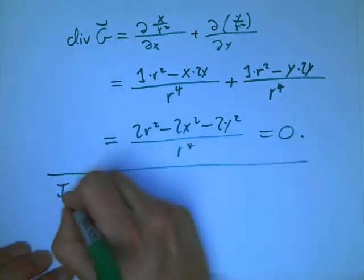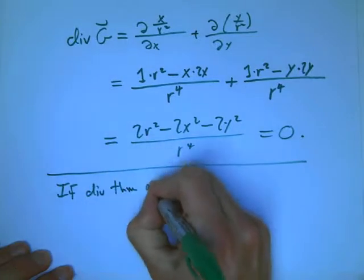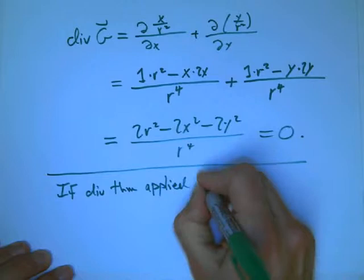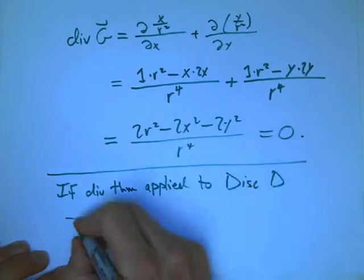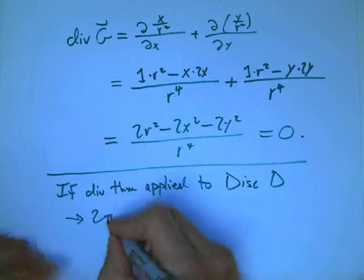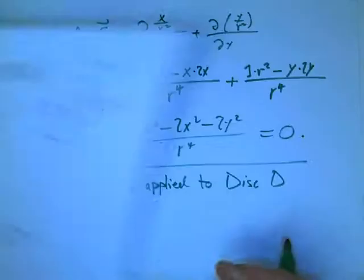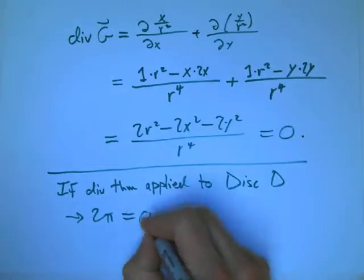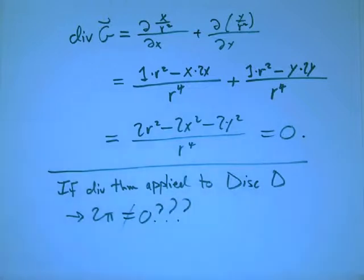That's a very pretty result, but immediately, it's a very disturbing one. Because if the divergence theorem applied to our disk D, then we'd have 2π on the left-hand side. That was the integral. That was the flux of our boundary. That's supposed to be the integral of the divergence. But the integral of the zero function is just zero. Well, that's not true.